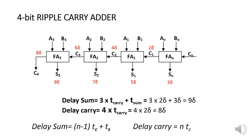Let's follow the path and add these delays consecutively. For the first Full Adder: delay of the sum = 3δ, delay of the carry = 2δ. For the second Full Adder: 2δ + 3δ = 5δ delay of the sum; 2δ + 2δ = 4δ delay of the carry. Third: 4δ + 3δ = 7δ delay of the sum; 4δ + 2δ = 6δ delay of the carry. Fourth: 6δ + 3δ = 9δ delay of the sum; 6δ + 2δ = 8δ delay of the carry. At this point the sum is completed: delay of the sum = 3 × t_carry + t_sum = 9δ; delay of the carry = 4 × t_carry = 8δ.